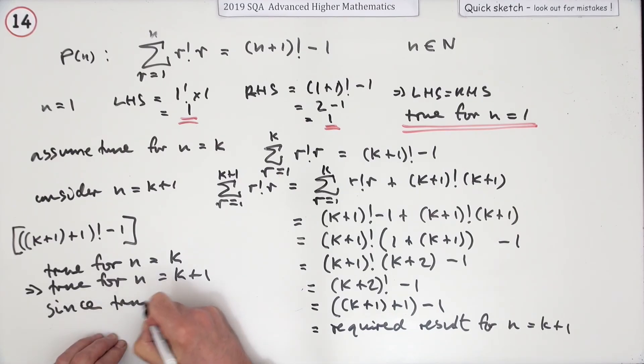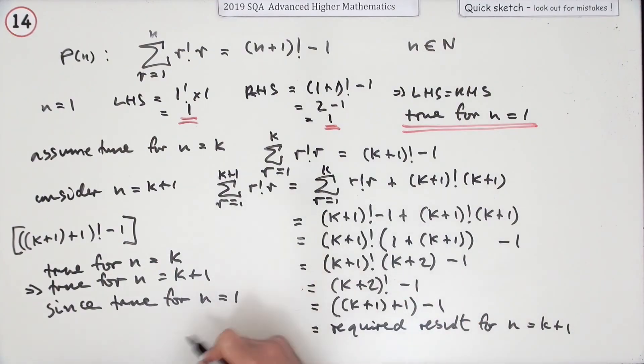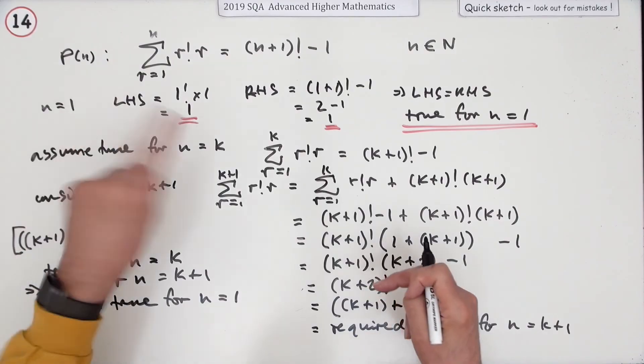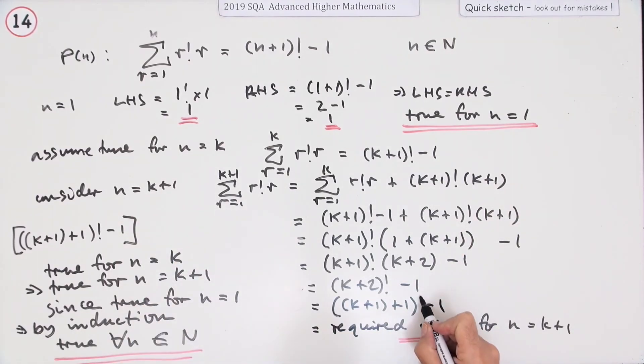Then, since it is true for n equals 1, then by the stepping stone principle it's true for all n. You don't say by the stepping stone principle because true for 1 is true for 2, true for 2 is true for 3. You then say that means by induction, it is true for all n. And it said positive integers, but that's the same as the natural numbers. There we go. I was just walking away from it there and I noticed I hadn't put in that little factorial. Oh, I told you to get the required result.